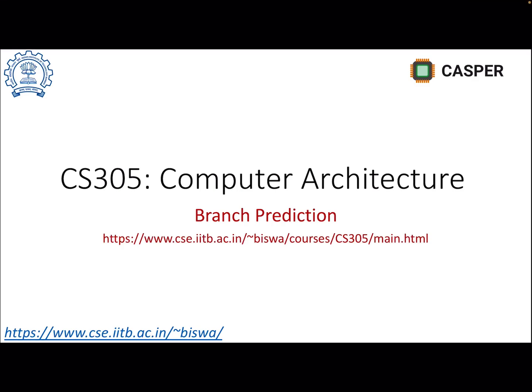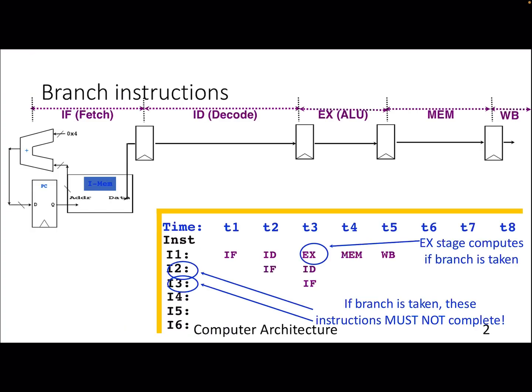Welcome to this lecture on computer architecture. Today we will discuss branch prediction, one of the techniques to mitigate control stalls caused by control hazards. In the last lecture we discussed branch delay slots, introducing stalls, introduction of NOPs, and adding an ALU in the decode stage. In this video, the assumption is that conditional branches are evaluated at the execute stage.